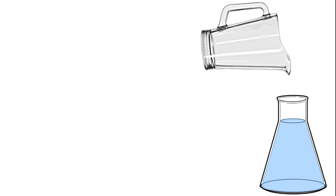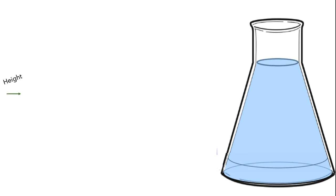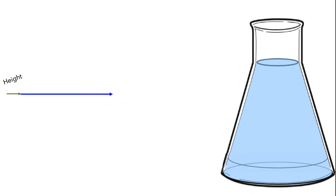Let's think about why this is. First, we'll zoom in so we can see the flask in a bit more detail. Next, I'll represent the height of the water in the flask. I'll use an oval to show the water that was in the flask before starting to pour. I'll represent the height of the water that was initially in the flask using a green arrow, and I'll represent the change in height of the water in the flask using a blue line. Next, I'll represent the volume of the water that gets added to the flask using a red arrow.